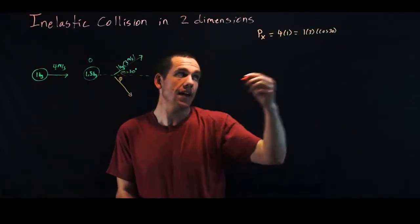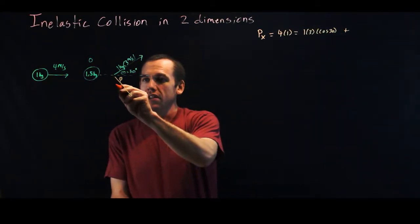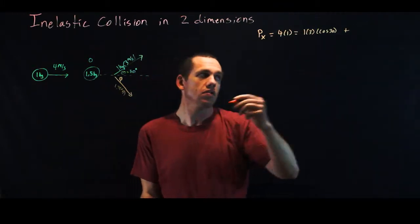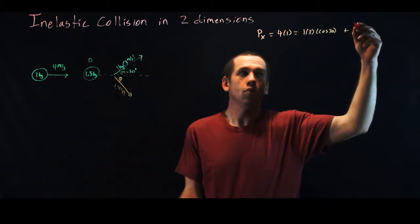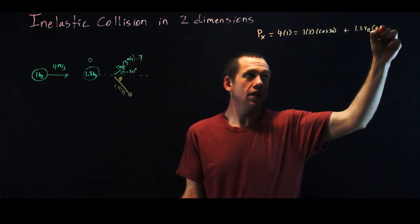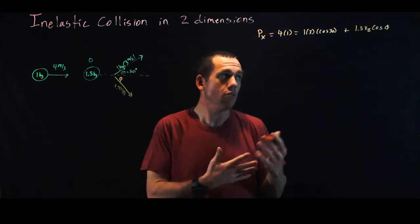That's the x component of that plus the x component of the other one, which I don't know, but this is 1.5 times vb down here, so this would be plus 1.5 vb cosine phi, where phi is this angle here. That's the momentum in x.